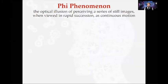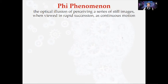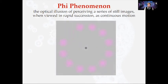The phi phenomenon is an optical illusion where we perceive motion when a series of still images are flashed in rapid succession. We tend to perceive that as continuous motion. For example, if you stare at the plus sign in the middle of a certain illusion and let your eyes relax a little bit, you'll notice that the pink dots disappear and you just perceive one moving light. That's a pretty interesting illusion.